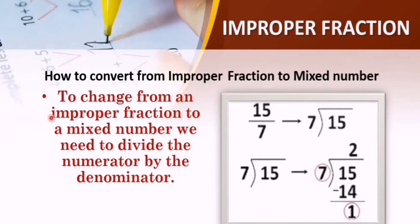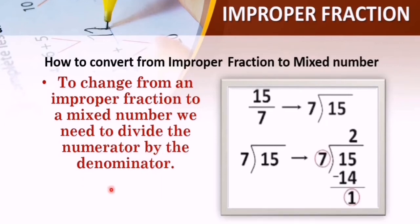First step: how to convert from an improper fraction to a mixed number. To change from an improper fraction to a mixed number, we need to divide the numerator by the denominator. We have 15 as the numerator and 7 as the denominator. We put 15 inside and 7 outside. Now start division: 7 times 2 we get 14, and 15 minus 14 we get 1. This is our quotient.